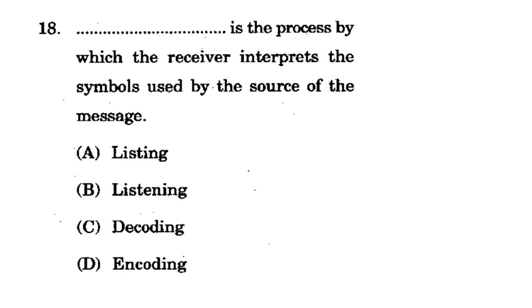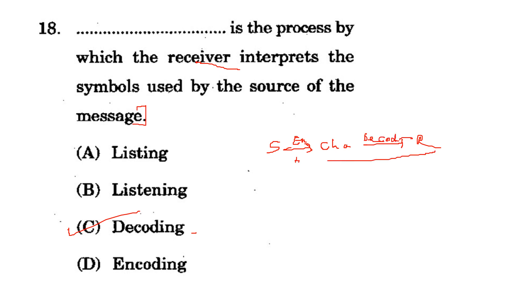Question 18: 'Blank is a process by which the receiver interprets the symbols used by the source of the message.' Options: listening, decoding, encoding. The correct option is C - decoding. The sender sends a message through a channel; it is encoded in a certain language and then decoded by the receiver from the channel. This process is called decoding.